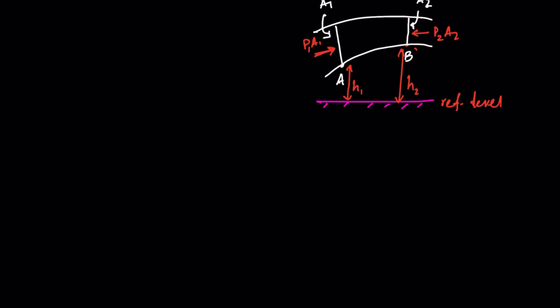Consider the liquid surging forward and advancing into the tube through area of cross-section A1. If I allow a small time interval delta T, so when the fluid starts entering through this area of cross-section, after delta T time it will reach a point called A-dash. So after time delta T, the fluid that has entered through this face is contained in this volume.